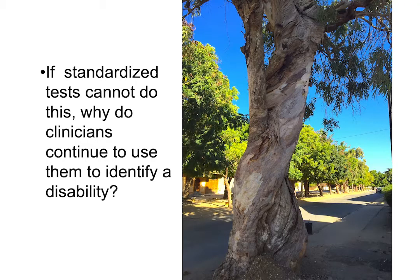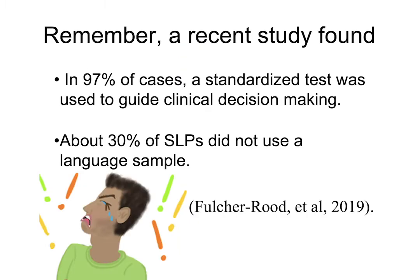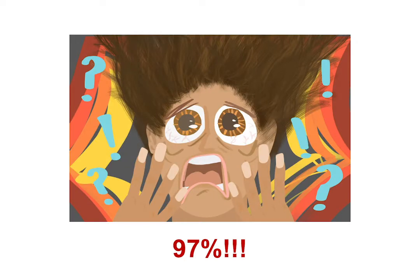We've learned that these omnibus language tests are not able to make that differential diagnosis between a language disorder and something else. If standardized tests can't do it, why do clinicians continue to use them to identify a disability? That recent study by Fulcher-Rood and colleagues found that in 97% of cases a standardized language test was used to guide clinical decision-making, and about 30% of the SLPs did not use a language sample. 97%!